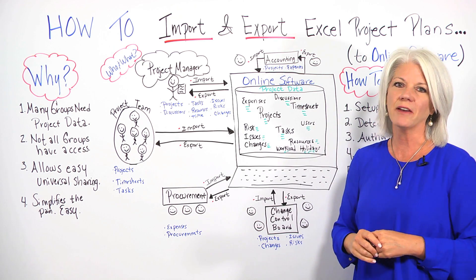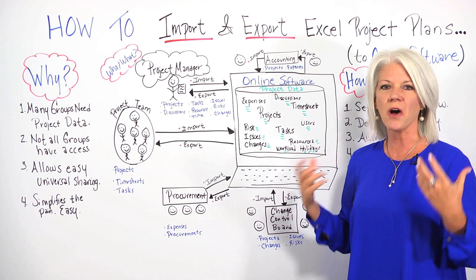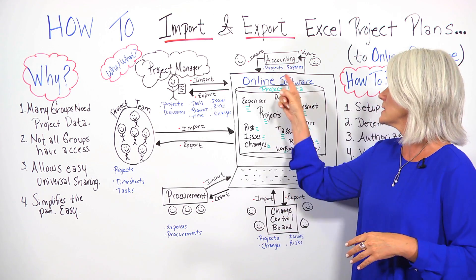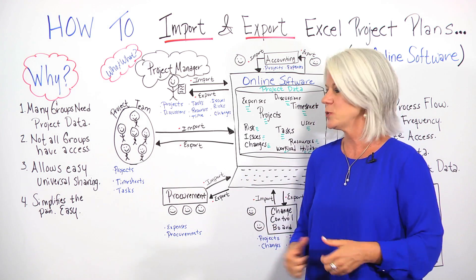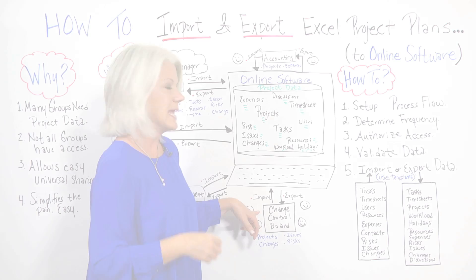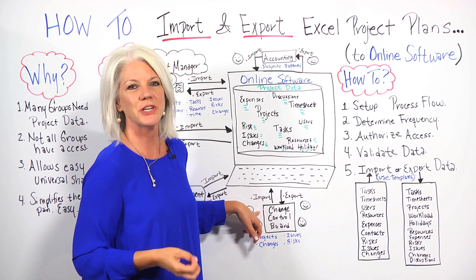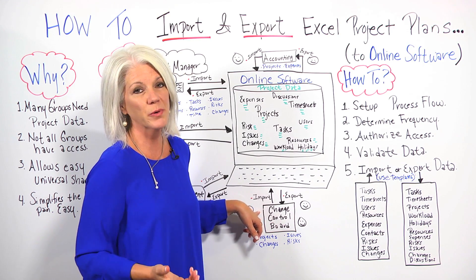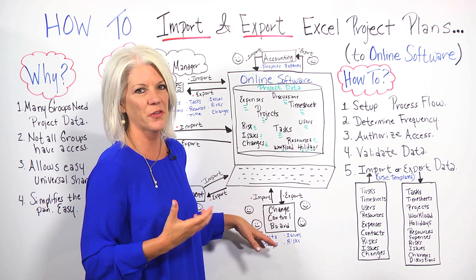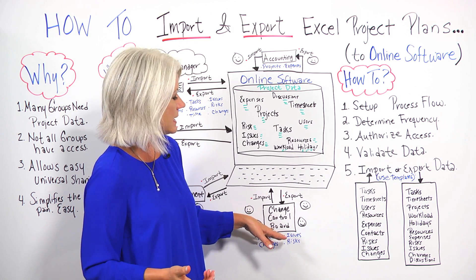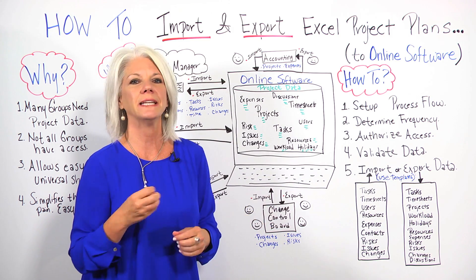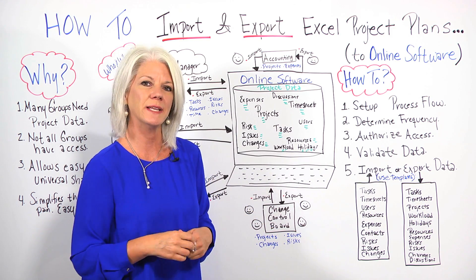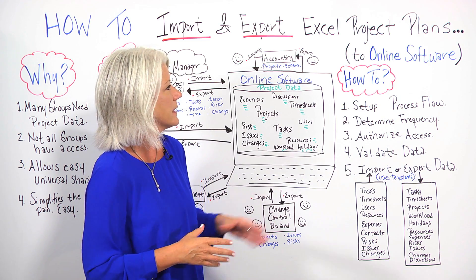The accounting group tracks all of the projects as well as the expenses associated with each one. The change control board makes important decisions about the changes occurring on the project, and they also need insights into the issues and risks that may have an impact.